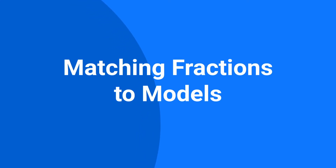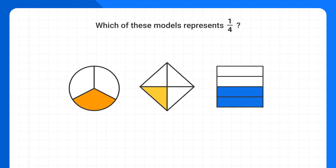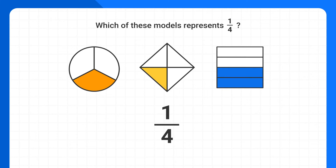Today we're learning how to match a fraction to a model. Let's start by finding which of these models represents 1 fourth. In a fraction, the denominator, or bottom number, represents how many pieces are in the entire whole. So we need a model that has 4 total pieces in it.